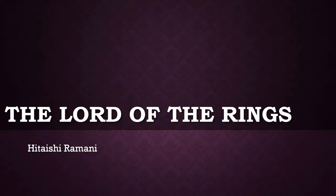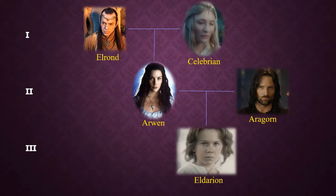In this presentation, we'll be examining the pedigree of some of the characters from the Lord of the Rings. The Roman numerals here represent the generations in this pedigree, so we have three generations. The squares are the males and the circles are the females. We'll be examining the height trait in this pedigree.